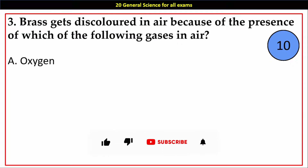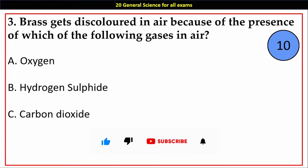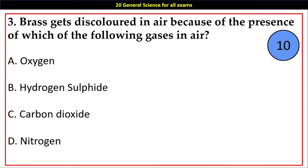Question number 3. Brass gets discolored in air because of the presence of which of the following gases in air? Options A. Oxygen, B. Hydrogen Sulfide, C. Carbon Dioxide, D. Nitrogen. Answer: B. Hydrogen Sulfide.